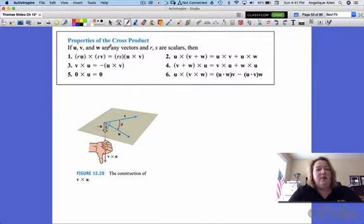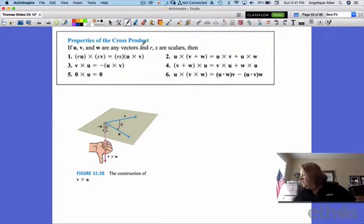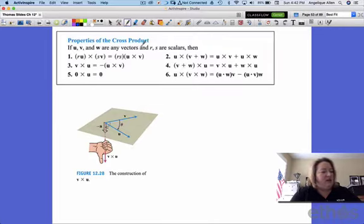So if U and V and W are any vectors, and R and S are scalar quantities, then all of these facts are true. Would you pause this and see if you can name these properties if you recognize them, and then hit play, and you can check yourself in the textbook. These are listed on page 726.